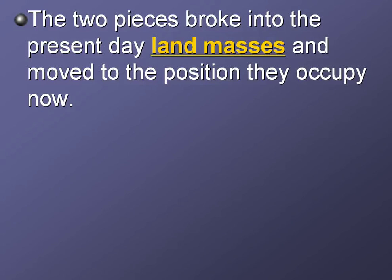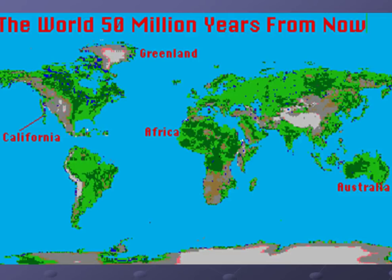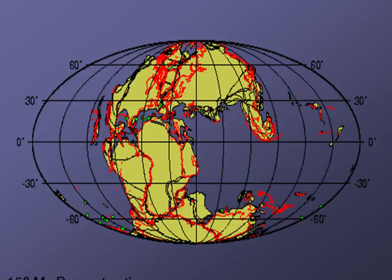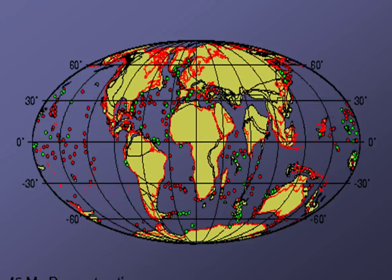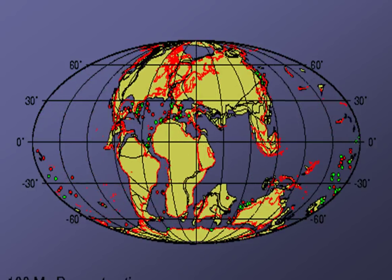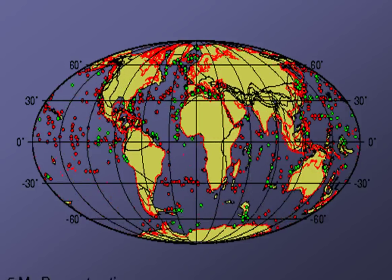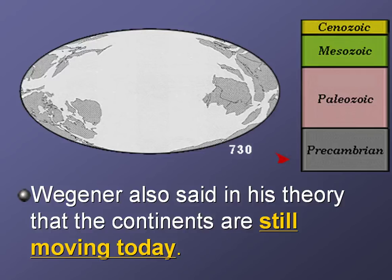The two pieces — Pangaea broken into Laurasia and Gondwanaland — then broke further into the present-day landmasses and moved to where they are occupied today. You can see where everything moved. This is actually a projection of what scientists theorize might happen 50 million years from now. Here's an animation of how things move — it happens fast in the animation. Watch India as it moves up, because we'll be talking about that later in our notes. India is kind of like a speed demon — it really took off and seems to move faster than some of the other continents.